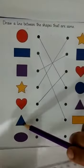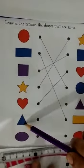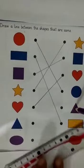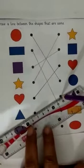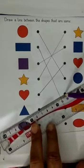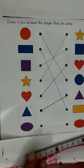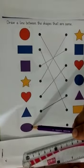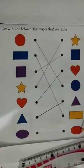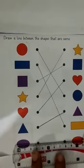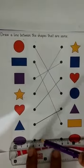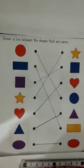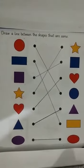Next, what shape is this? This is a triangle. We match one triangle to another triangle. Both are same. And now what shape is this? This is an oval. We match one oval to another oval. Both are same.